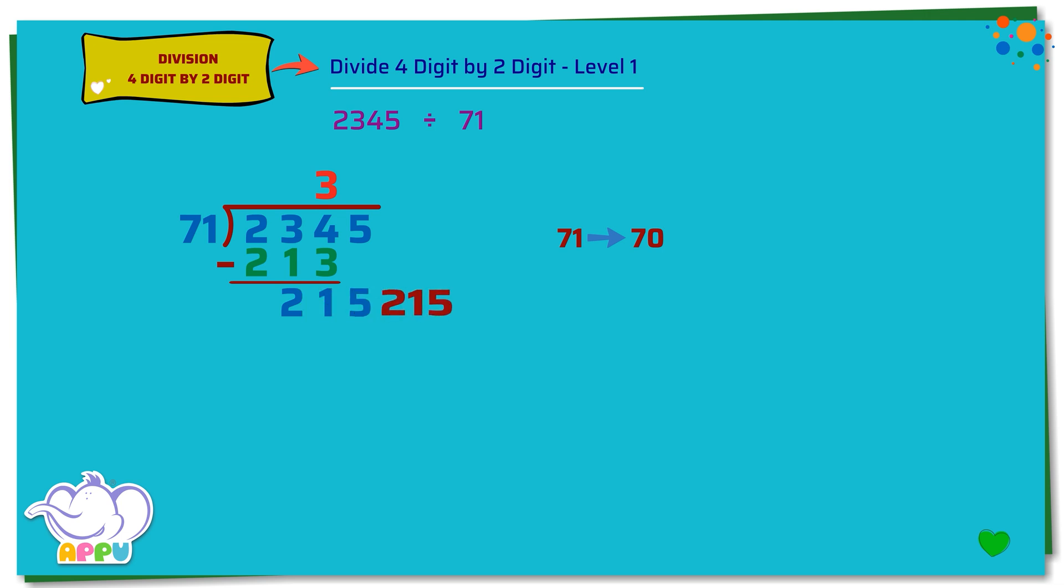And then divide 215 by 70, which is 3. We multiply 71 times 3 equals 213, which is just less than 215. So it takes 3 71s.